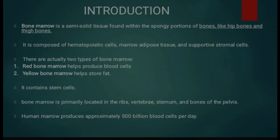Introduction: bone marrow ek semi-solid tissue hai jo bones ki spongy portions mein paaya jata hai, jaise ki hip bones aur thigh bones. Ye hematopoietic cells, marrow adipose tissue, aur supportive stromal cells se milkar bana hota hai. Bones do tarah ke hote hain: red bone marrow jo blood cells ke production mein help karta hai, aur yellow bone marrow jo fat storage mein help karta hai. Ye stem cells ko contain karta hai.